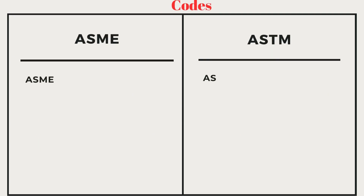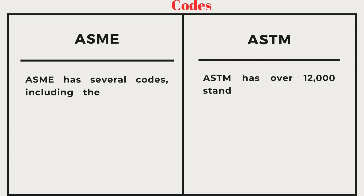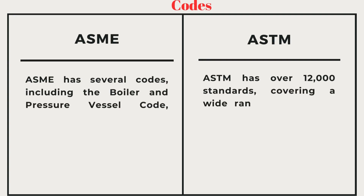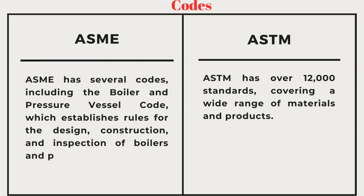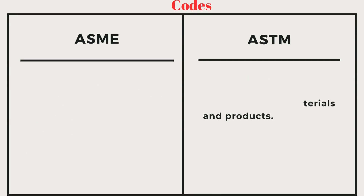ASME has several codes, including the Boiler and Pressure Vessel Code, which establishes rules for the design, construction, and inspection of boilers and pressure vessels. ASTM has over 12,000 standards, covering a wide range of materials and products.